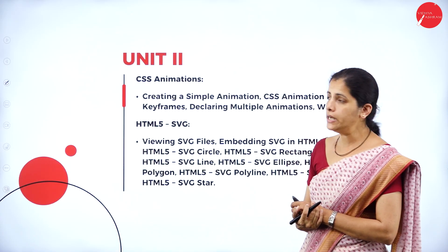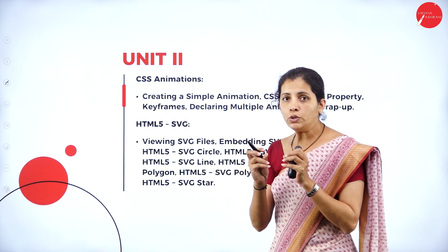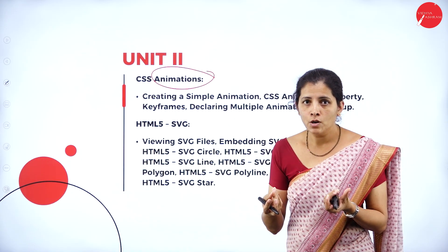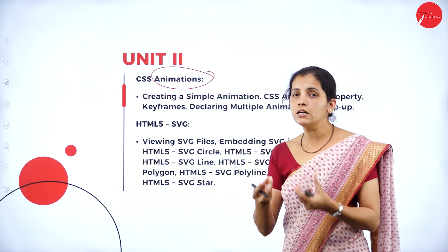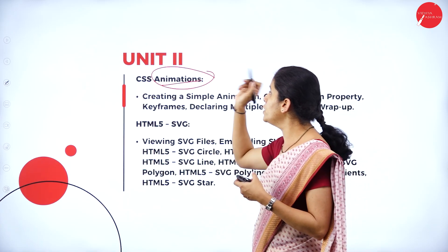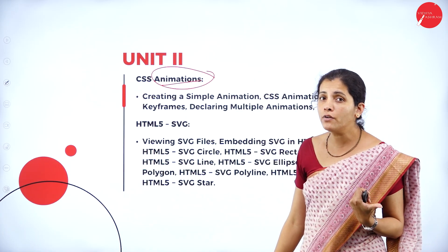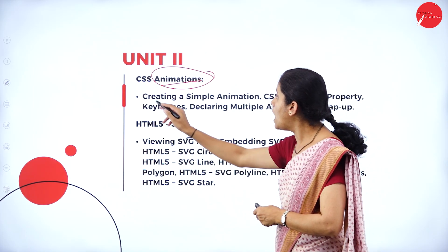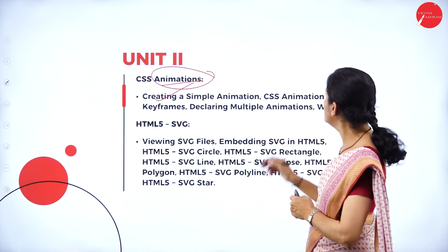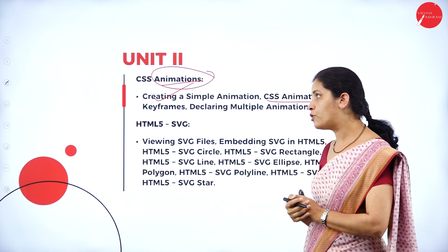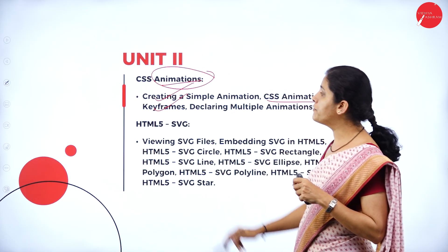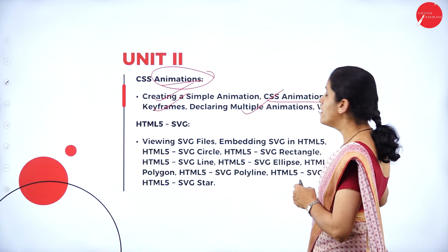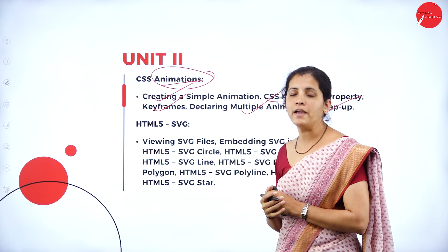In the second unit, I am going to deal with animation. What is animation? I want to give graphical effects, and for that reason I am going to have animation. It is CSS — Cascade Style Sheet — animation. I will cover how to create simple animation, CSS animation properties, keyframes, declaring multiple animations, as well as wrap-up. All those things I am going to deal with in the first chapter of unit two.